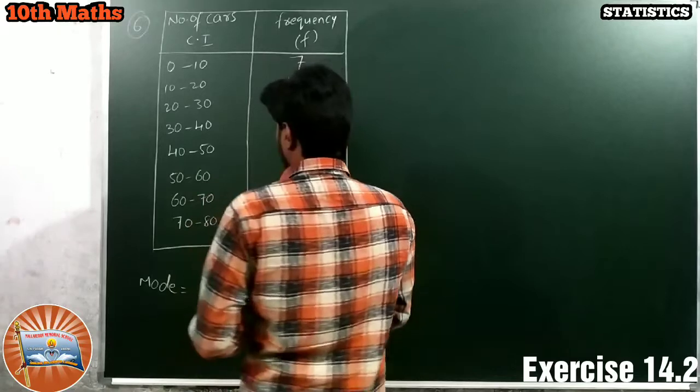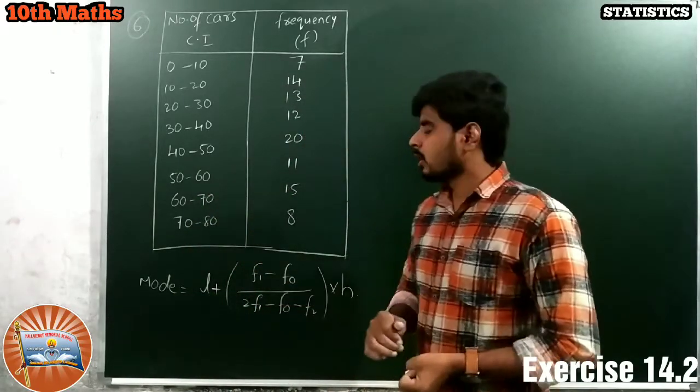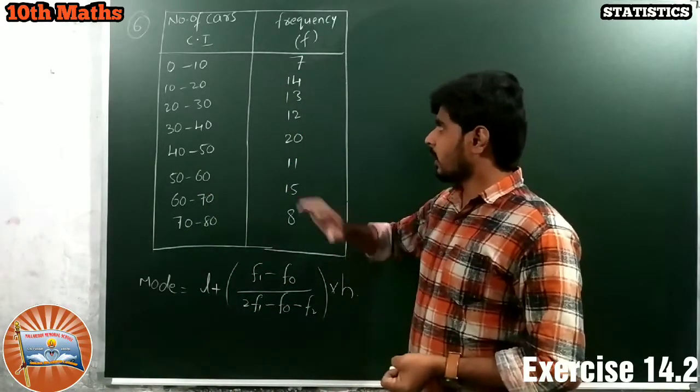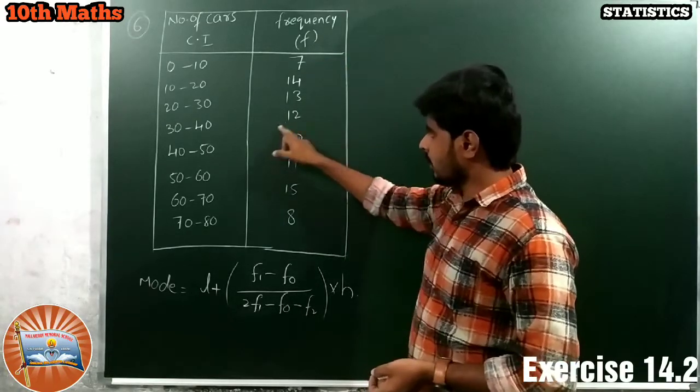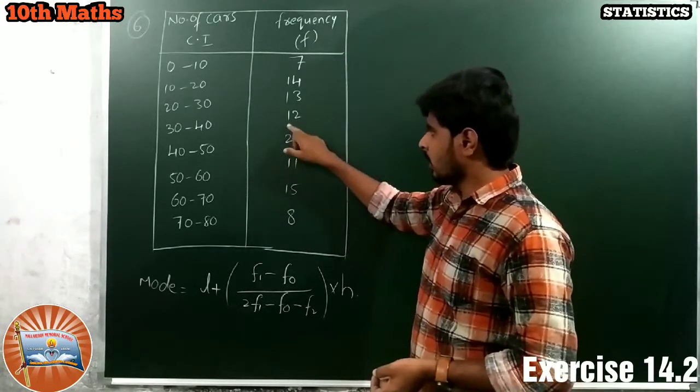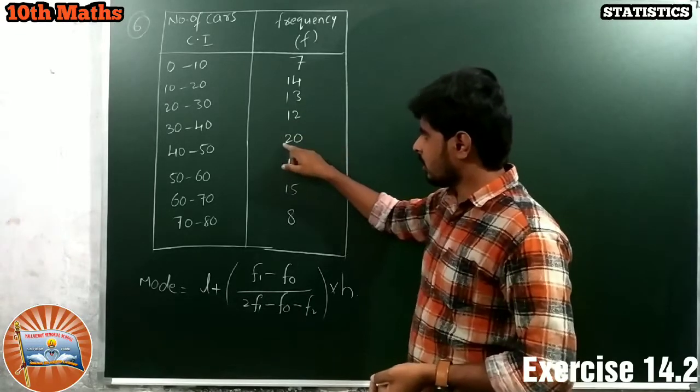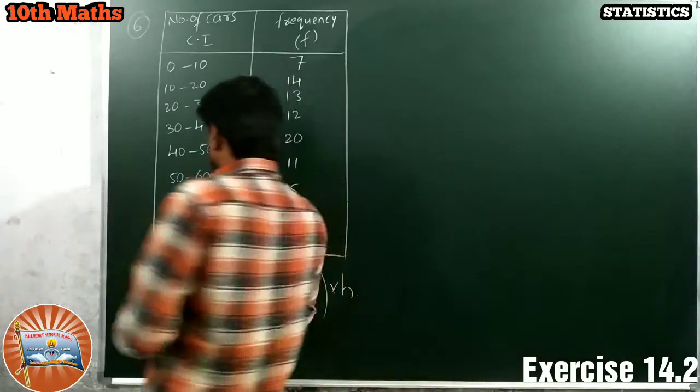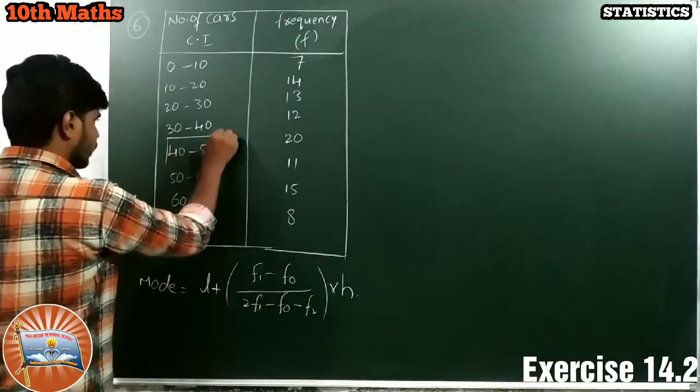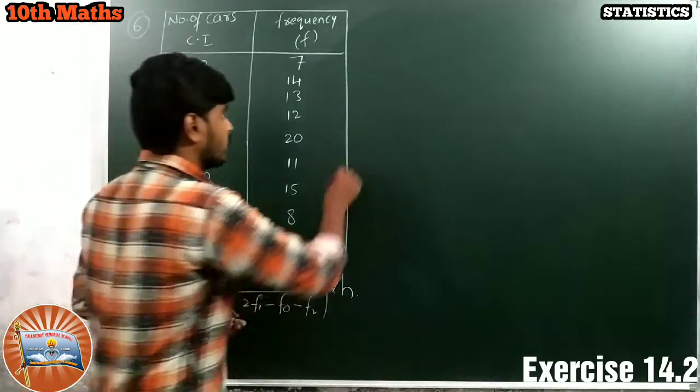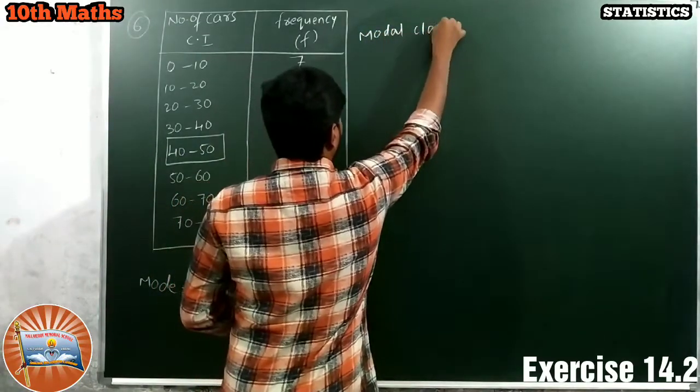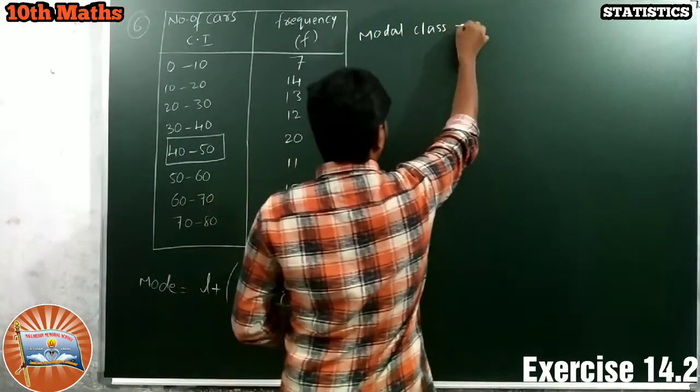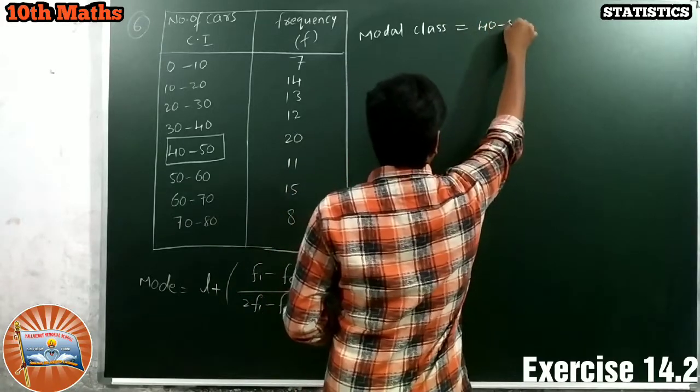Now, we have to choose first modal class. How we find the modal class? By taking the highest frequency. What is the highest frequency here? Yes, 20 is the highest frequency. The class interval of this 20 is 40 to 50. This is the modal class, 40 to 50.